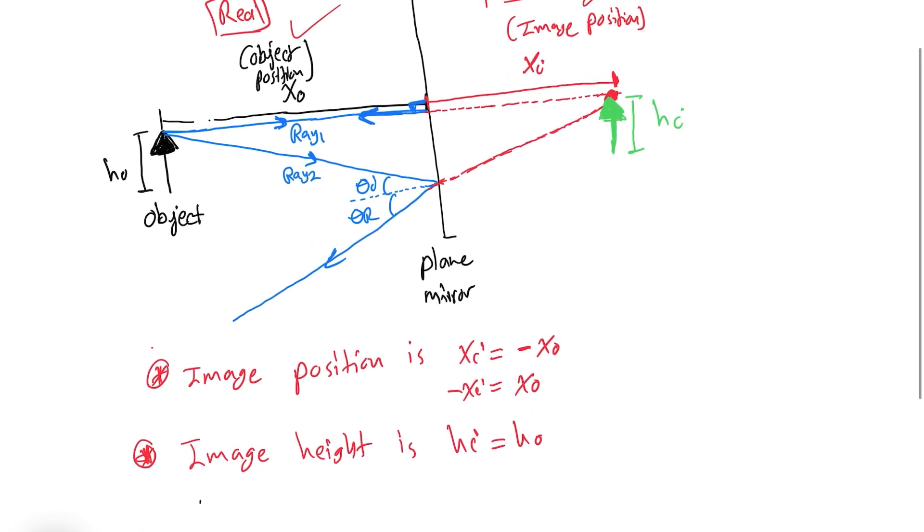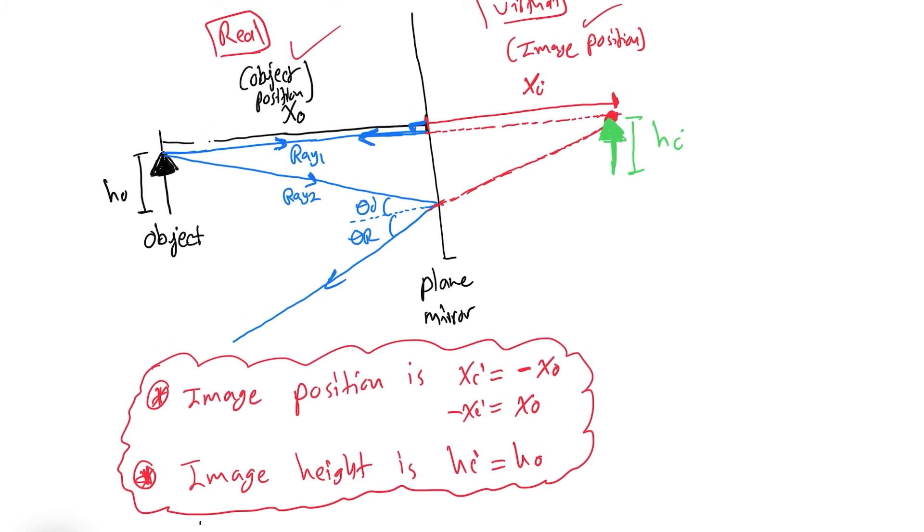These are basically the rules that you need to keep in mind when you are constructing an image using a plane mirror. If we trace the steps to what we have done so far, the steps are quite straightforward. You will be taking ray number one, then you're going to virtually extend it backwards. Then you're going to be taking ray number two, make it hit the mirror and reflect it, and then you're going to extend the reflected ray backwards to meet ray number one. At the point where they meet, you're going to be having your image.